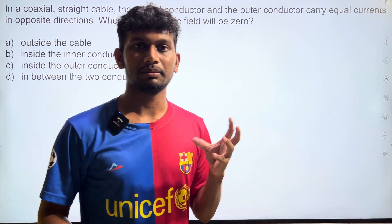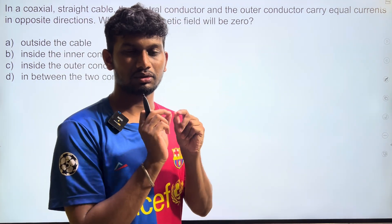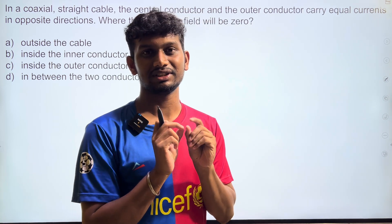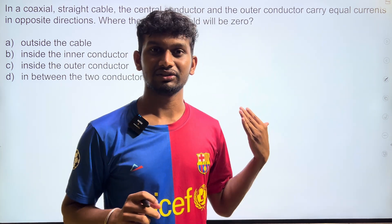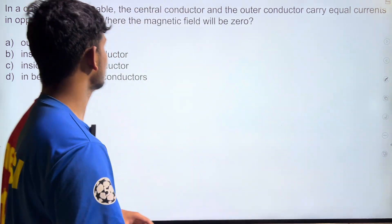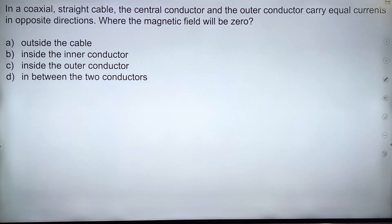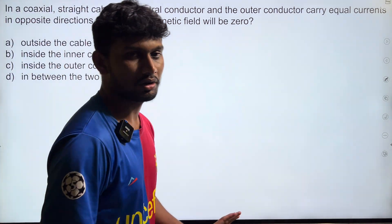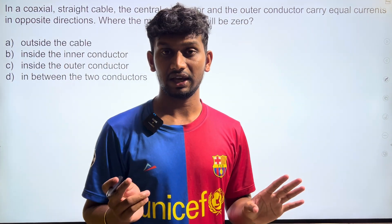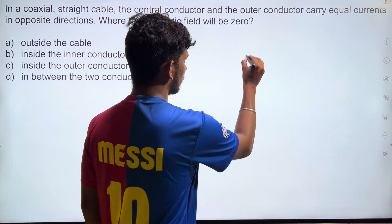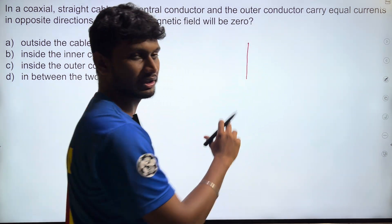This is a very simple problem but there is a checkpoint here. The question is: for a coaxial straight cable, the central conductor and the outer conductor carry equal currents in opposite directions — where will the magnetic field be zero? The law used here is Ampere's Law, where there is a current source.